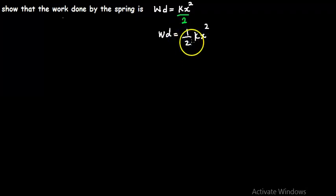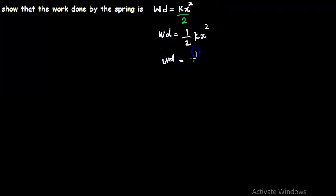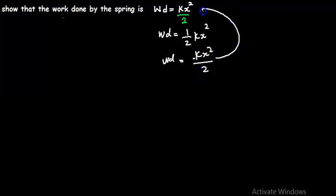If you multiply kx squared by 1, this is the same thing as writing work done equals kx squared divided by 2. This equation is the same thing as this.